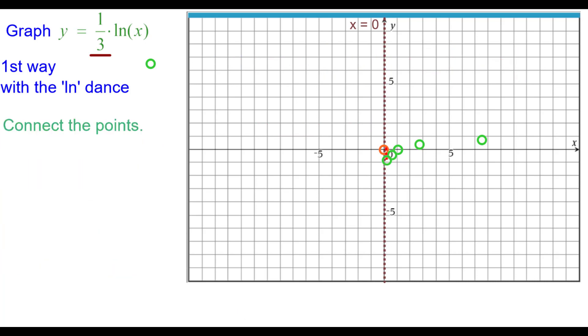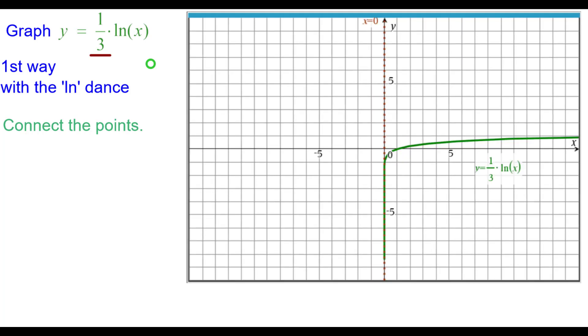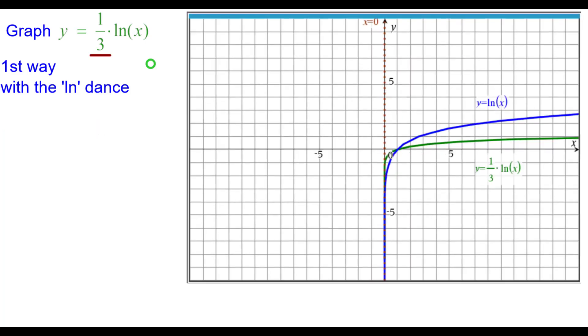Go ahead and connect the points using the asymptote as a boundary line, and compare it to the blue parent function. You can see that the y values in blue, multiplied by a third, are the green y values, not just for these points, but for all points.